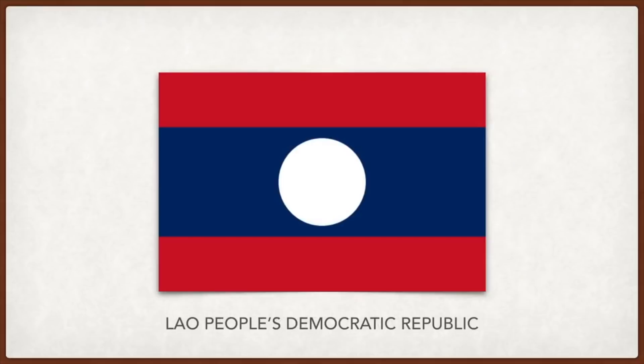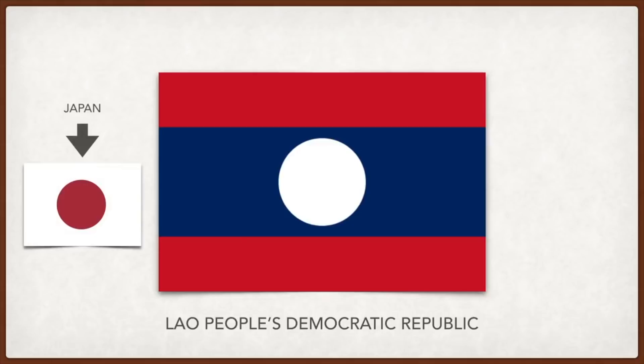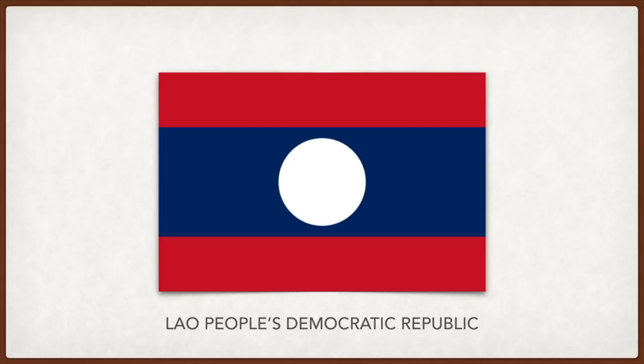Laos: the flag was originally the flag of the Pathet Lao, the communist forces that fought against the monarchy. The white disc honored the Japanese who had promoted Lao independence; it is also symbolic of a bright future. Red stands for the blood of those seeking freedom and independence, and blue is for the promise of future prosperity.